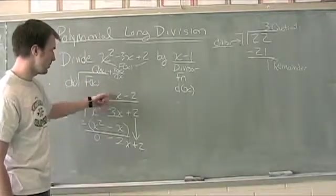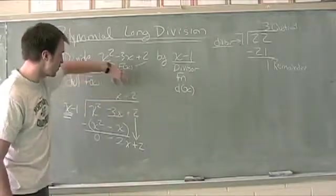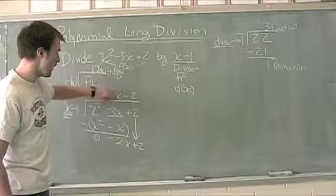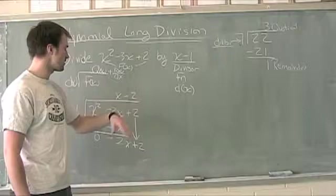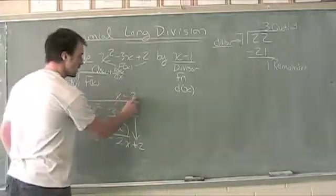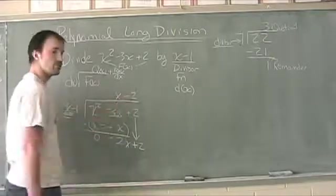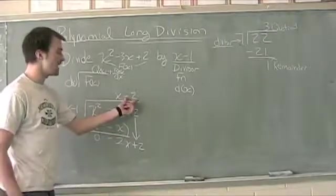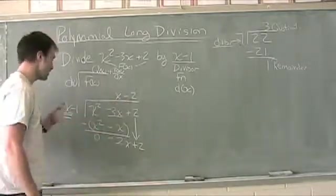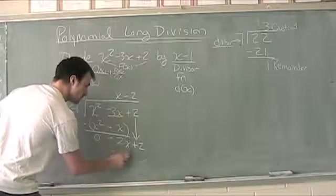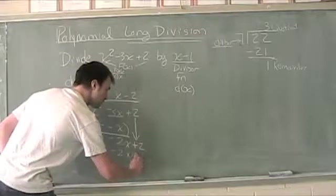I'm writing the x's above the x's, the 2s above the 2s—I'm making sure I have the same power of x lined up. What times x gives me negative 2x? That's negative 2. Now we take negative 2 times x minus 1, so negative 2 times x is negative 2x, and negative 2 times negative 1 is plus 2.